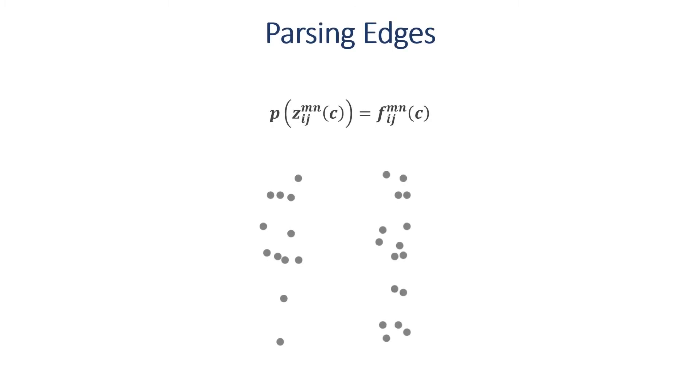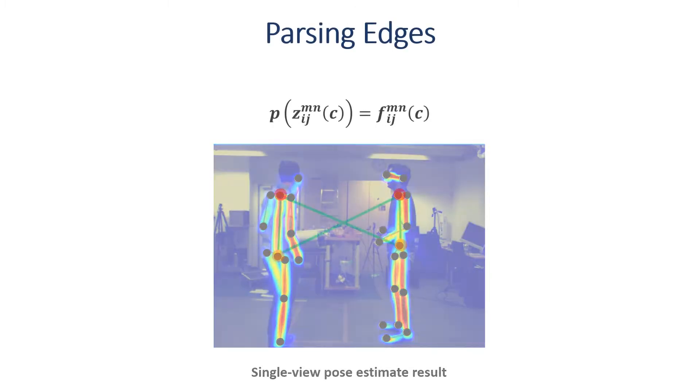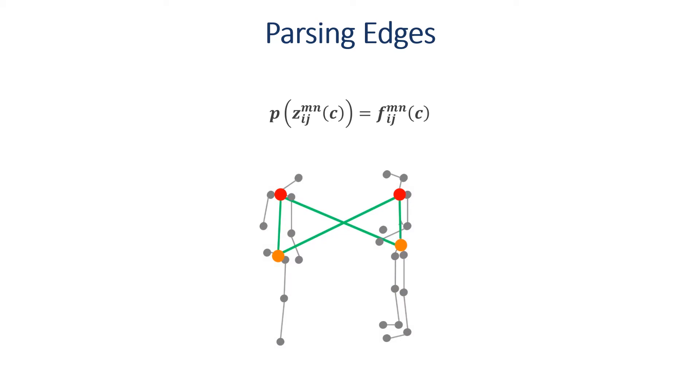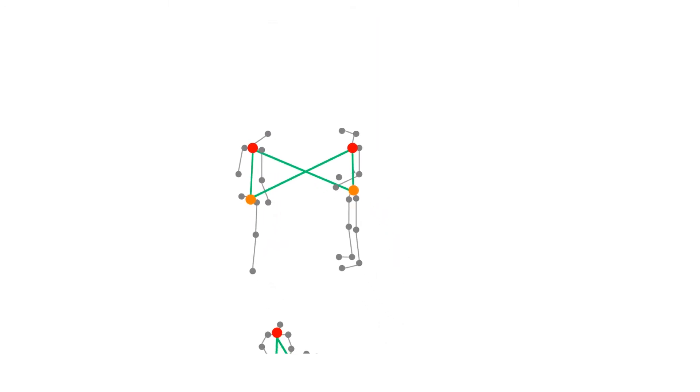Per-view parsing edges connect adjacent body parts in each image view. We directly define the input edge weight as its part affinity field score computed by pose estimation network.